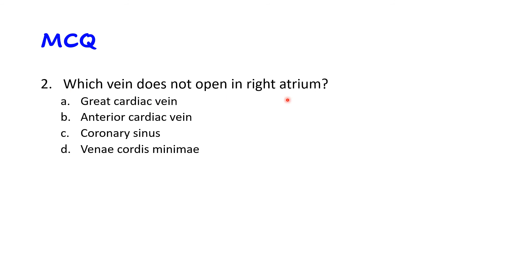MCQ: Which vein does NOT open into the right atrium? The great cardiac vein does not open directly into the right atrium — it is a tributary of the coronary sinus, which itself opens into the right atrium. Anterior cardiac veins open directly into the right atrium. The coronary sinus also opens into the right atrium. Venae cordis minimae open into each chamber, including the right atrium. So the correct answer is A — great cardiac vein.